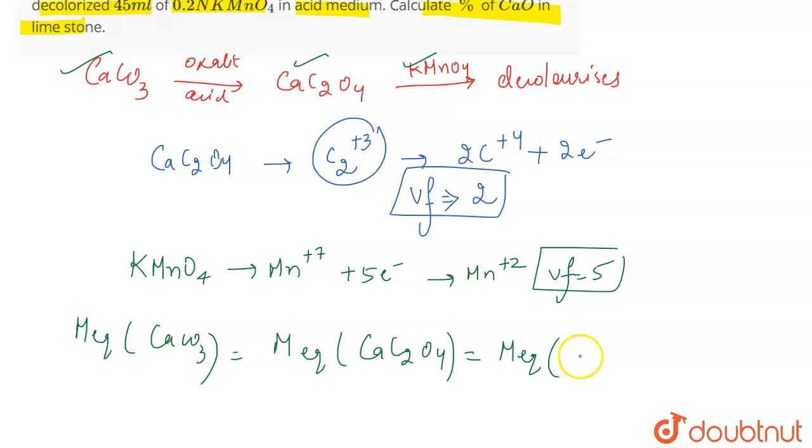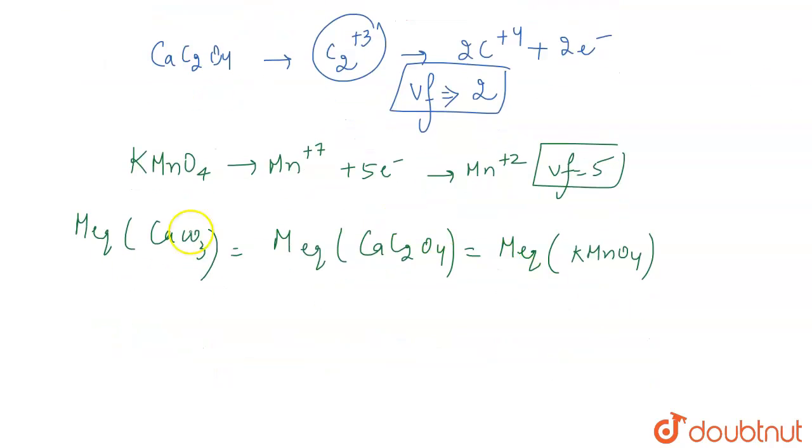This can also be written as the milliequivalence of CaO (calcium oxide) in the limestone. So the milliequivalence of CaO equals the milliequivalence of KMnO4, because we need the percentage of CaO and we're given the normality and volume for KMnO4.